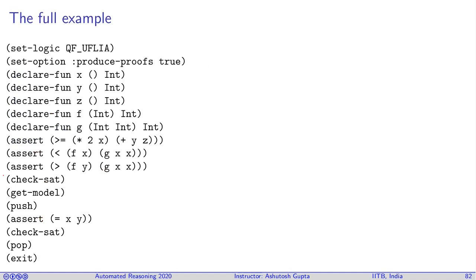So let me put all this together. You have basically declaration of what kind of logic is here and then you're saying I want to produce proofs if you have unsatisfiability. Then you declare variables, you can declare functions and then you can write formulas. You can tell solver to check satisfiability.